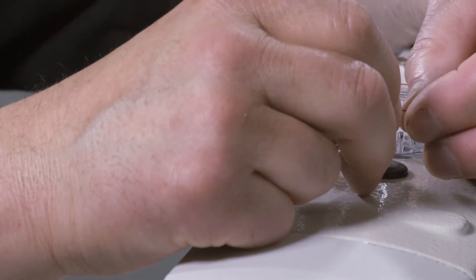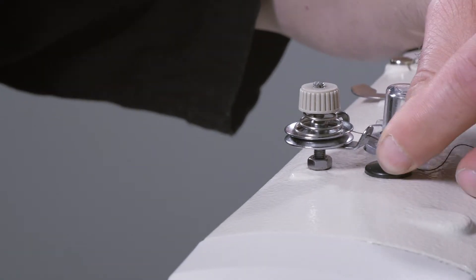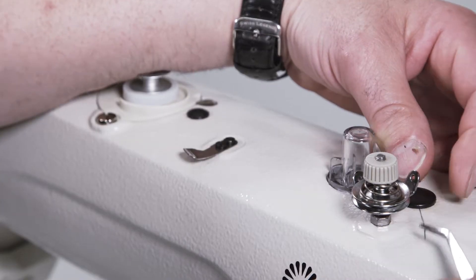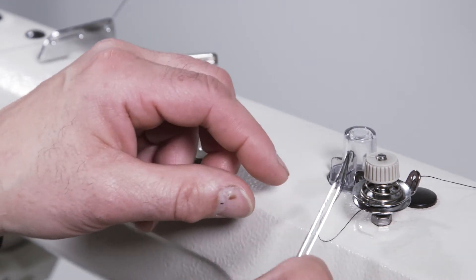Bring the thread through the rear eyelet of the tension assembly, securely between the discs, then through the left eyelet.